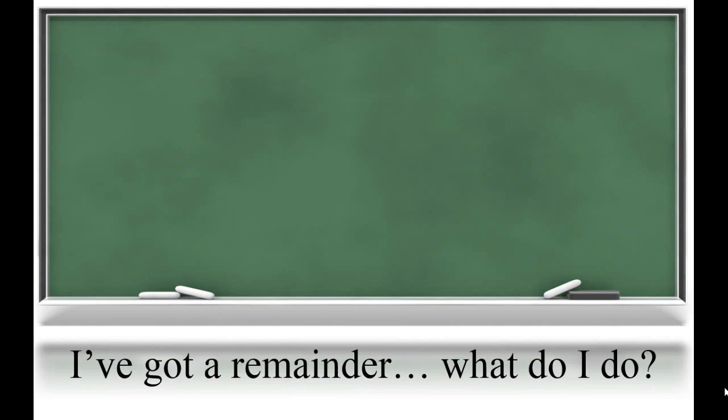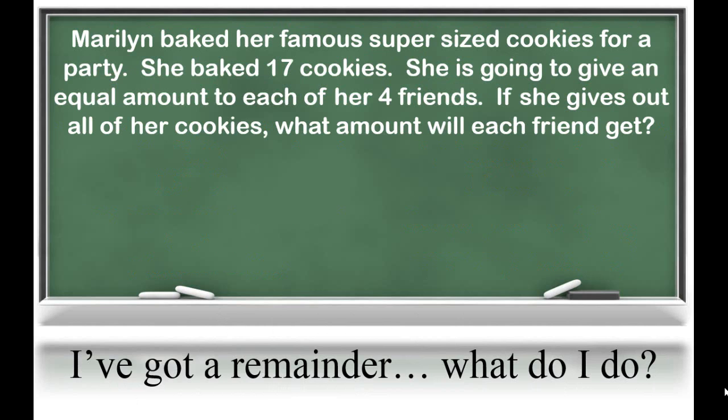Let's look at another situation that students might encounter. Marilyn baked her famous super-sized cookies for a party. She baked 17 cookies and is going to give an equal amount to each of her 4 friends. If she gives out all of her cookies, what amount will each friend get? We know that she baked 17 cookies and she's going to divide them equally among her 4 friends, so we're going to do 17 divided by 4.